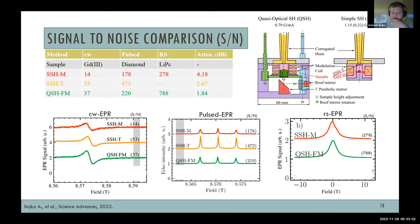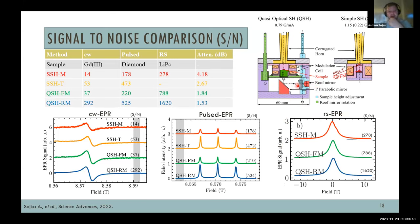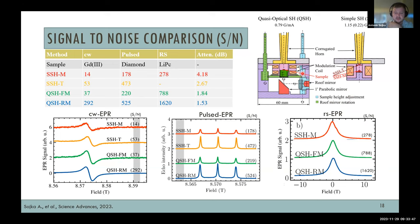Placing the sample close to the corrugated waveguide improves signal-to-noise for continuous-wave and pulsed EPR, but rapid-scan EPR doesn't work because modulation amplitude is insufficient for sweeping the full spectrum. With the quasi-optical sample holder using only a flat mirror, SNR improves compared to sample in the middle, but not as much as close to the waveguide. However, rapid-scan EPR is now observable. When we also apply the roof mirror and optimize isolation, we get the best SNR in all three EPR modes simultaneously — continuous-wave, pulsed, and rapid-scan — without needing to reposition the sample.